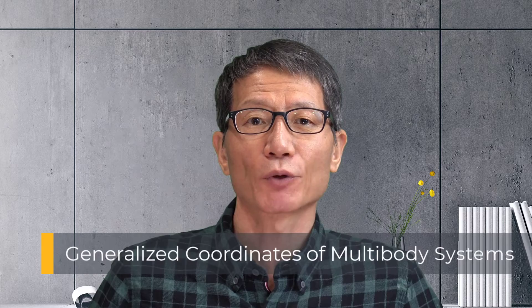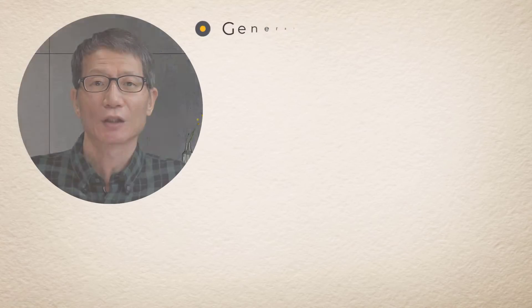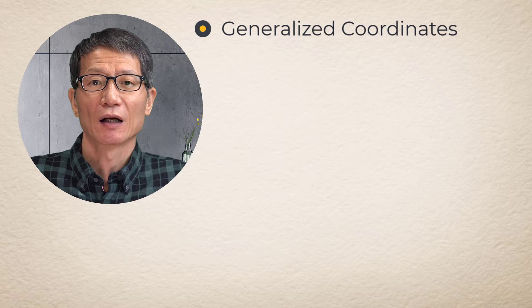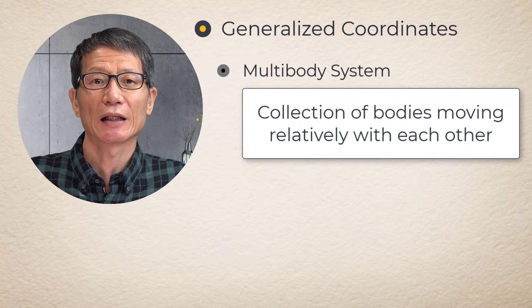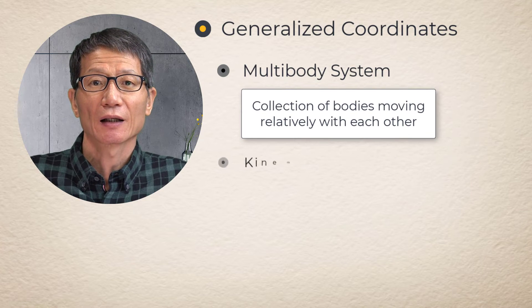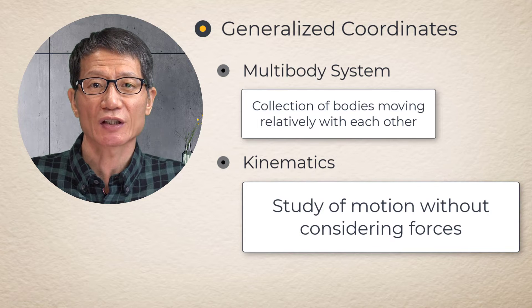Generalized coordinates for position and orientation of multibody systems. A multibody system is a collection of bodies relatively moving with each other. Kinematics is the study of motion without considering forces.